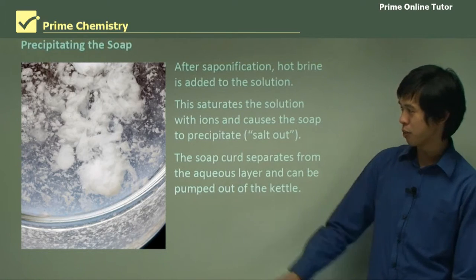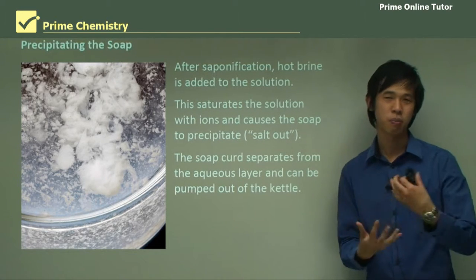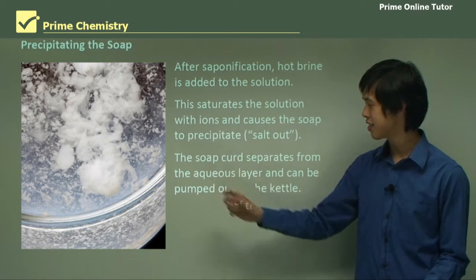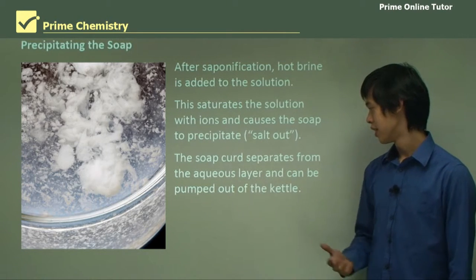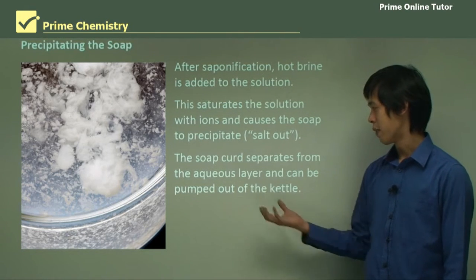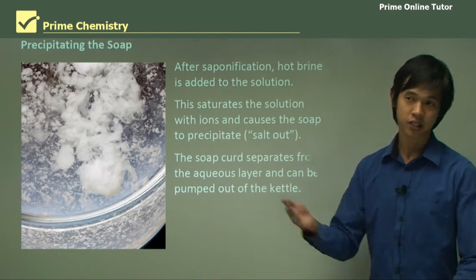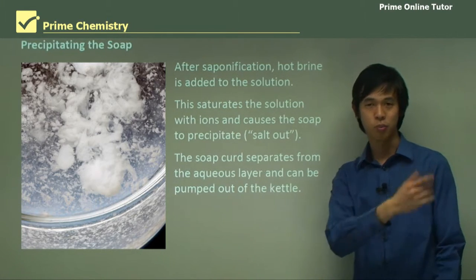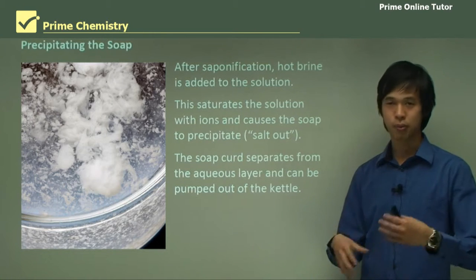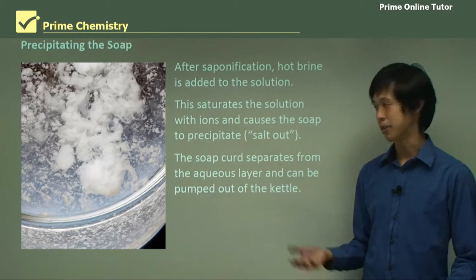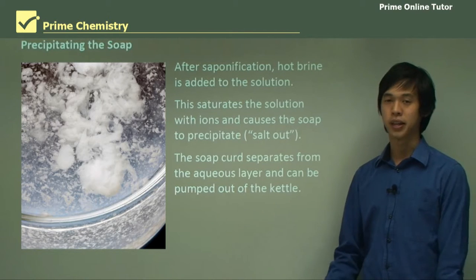It forms a curd-like structure — similar to when milk goes bad and forms curds. We call this soap curd. It separates from the aqueous layer and can be pumped out of the kettle, essentially skimming the soap off the top by precipitating it out. We can then skim the curds off and refine them again.